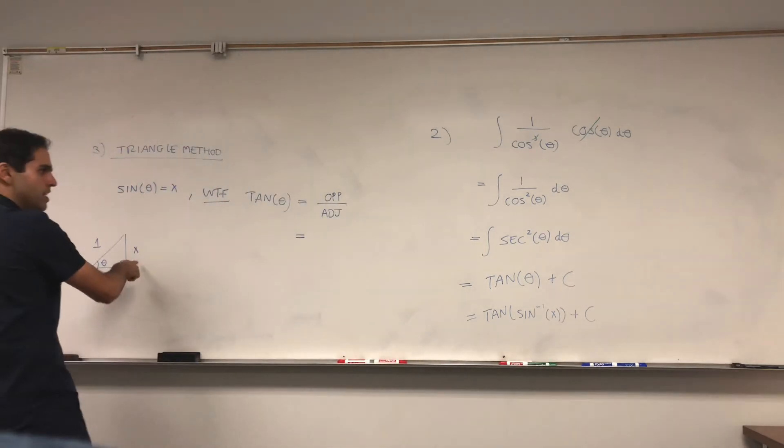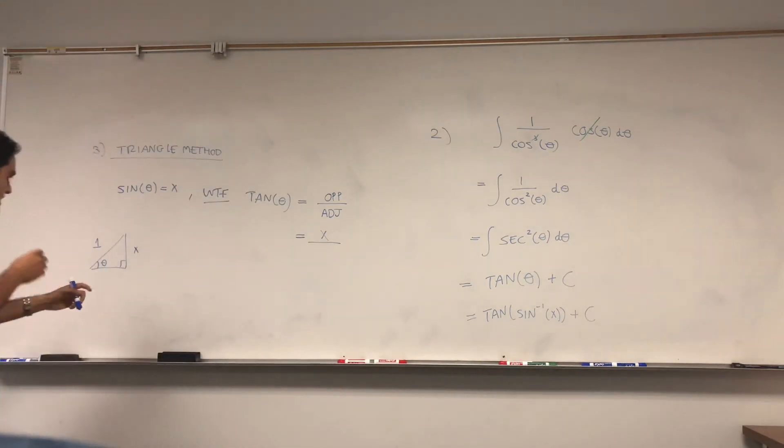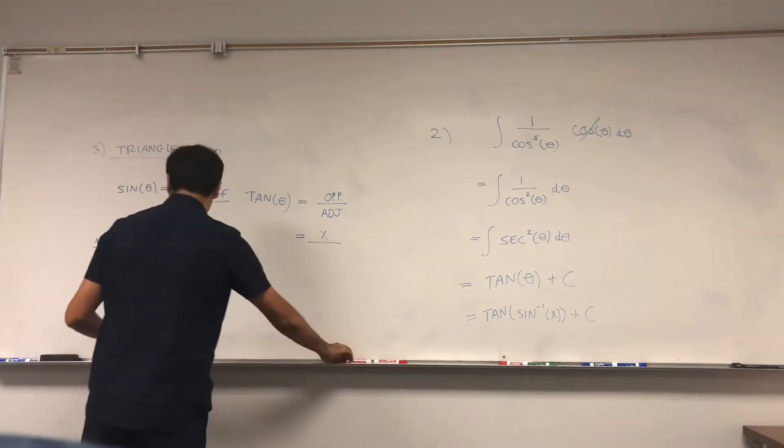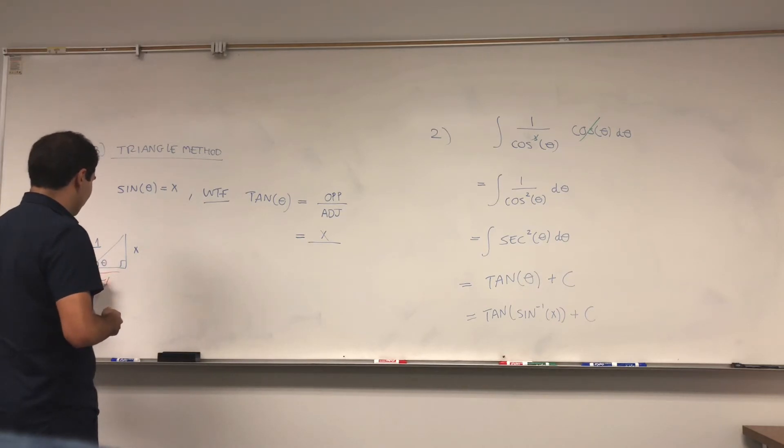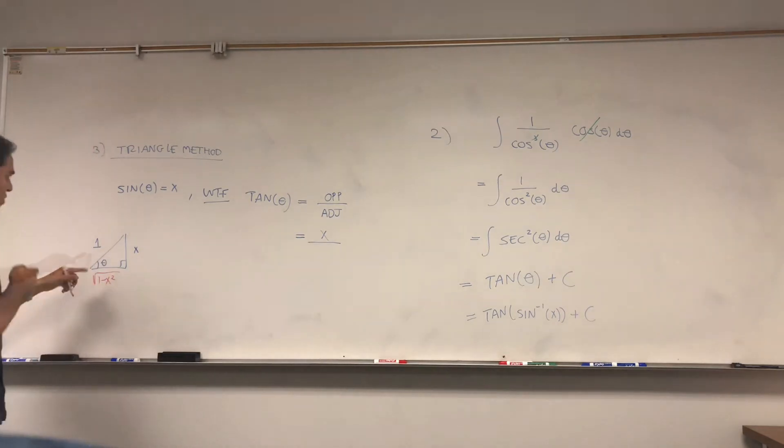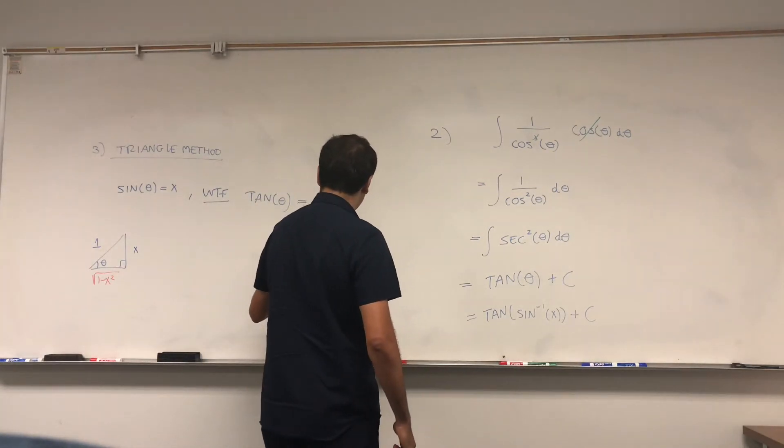That's great! The opposite here is x. To find the adjacent side, all you have to do is use the Pythagorean theorem. This side then just becomes square root of 1 minus x squared. So we have hypotenuse squared equals x squared plus this squared, and solving this you get that the adjacent is square root of 1 minus x squared.